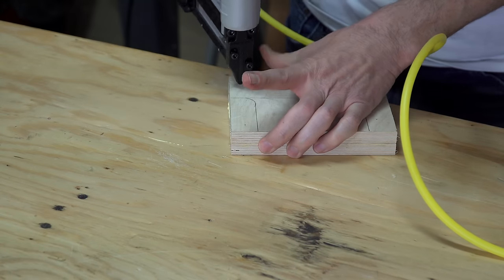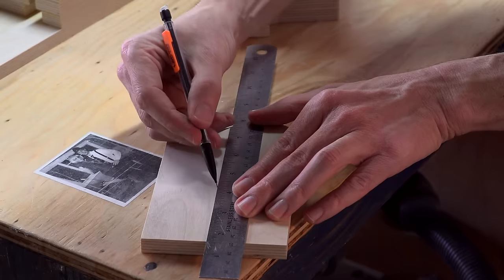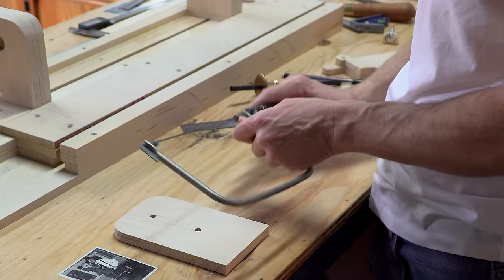To make the base of the toolbar though was a little bit different. Instead of just drilling a hole, I needed a slot. To make the slot, I drilled a couple of holes, and then drew lines to connect the slot.